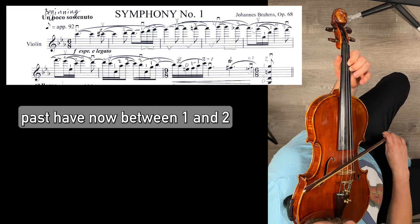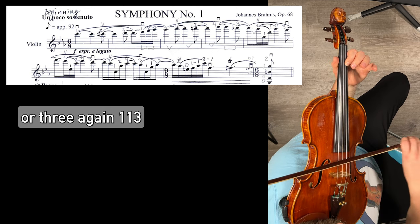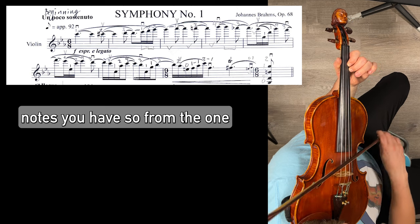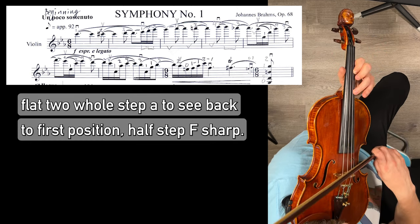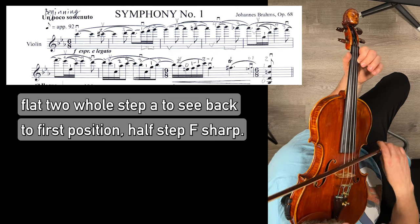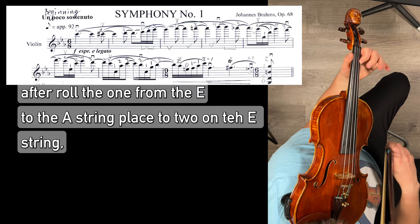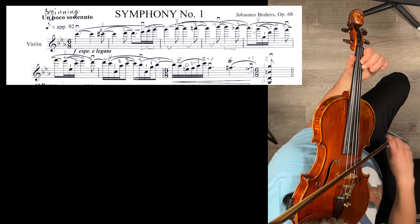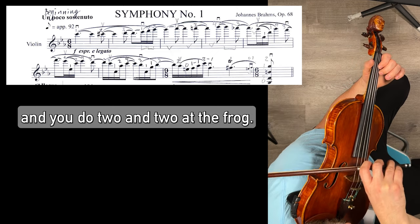Half step now between one and two. Whole step to three. Again. One, one, three. Low two. Half step from the one. First position. Half step shift. A flat. Two whole step to C. Back to first position. Half step. F sharp. Two over G natural. Open E. Half sharp. Roll the one from the E to the A string. Place the two in the E string. Make sure that the low two is matching open G. And you do two and two at the frog.